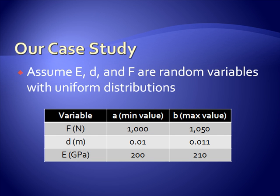So anyway, our force is going to be assumed to have a minimum value of 1,000 newtons and a maximum value of 1,050. And again, a uniform probability of occurring anywhere between those two. The diameter is between 1 centimeter and 1.1 centimeters. The modulus is between 200 and 210 gigapascals.